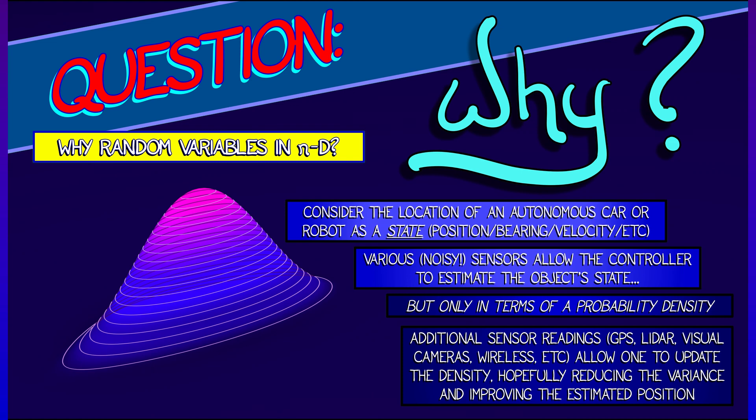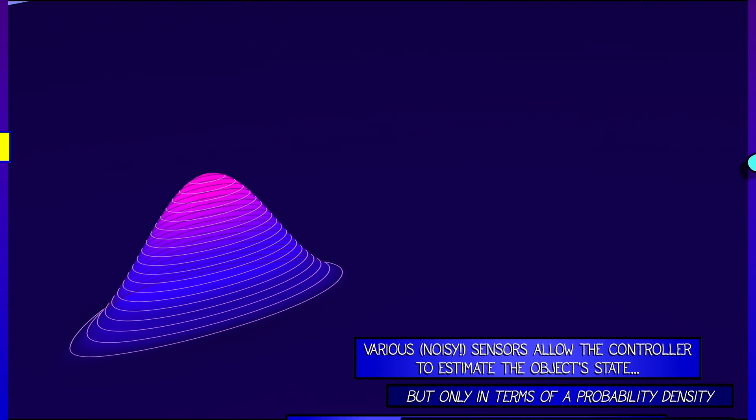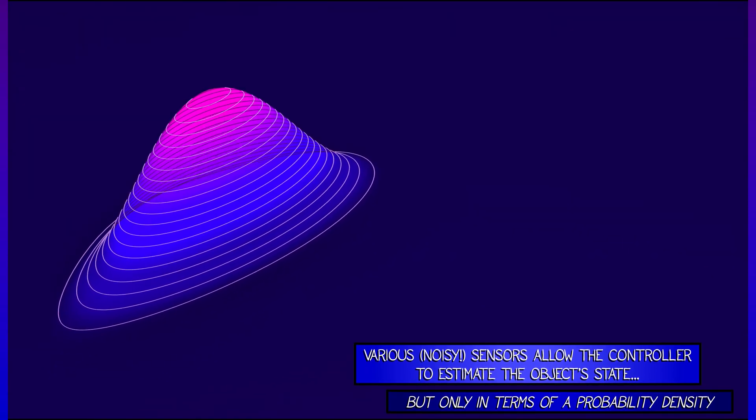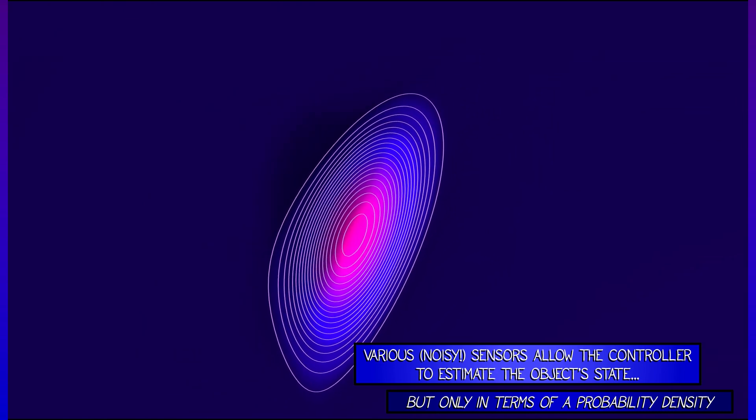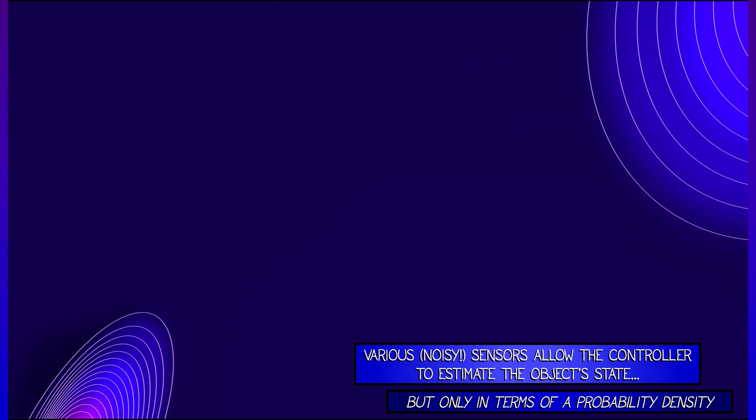So instead of saying, I know exactly that I'm here, you say, I know a probability density, and my expectation tells me that I'm here with highest probability, but really I have to argue in terms of subsets.